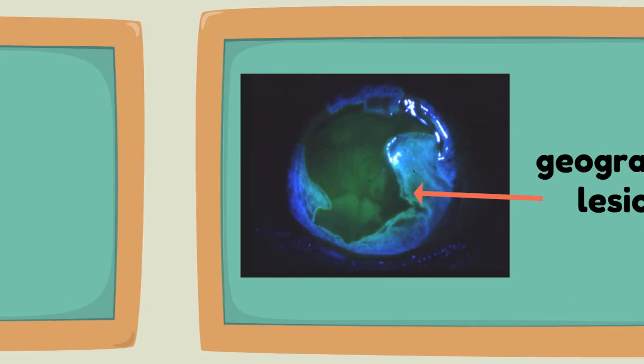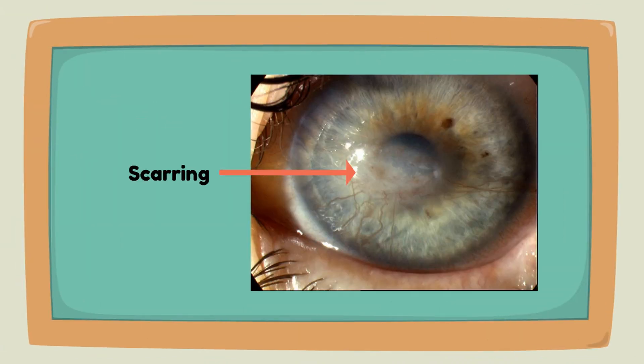In stromal keratitis, there is scarring, vascularization, or lipid keratopathy, as it is often recurrent with or without ulceration.